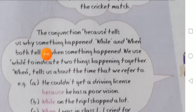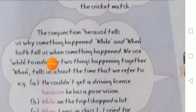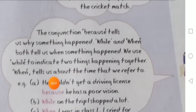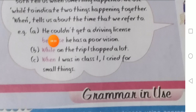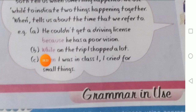The conjunction 'because' tells us why something happened — reason बताता है, यह काम क्यों हुआ। 'While' and 'when' both tell us when something happened. While का इस्तेमाल जब दो चीज़ें एक साथ होती हैं तब होता है, और when जब time बताता है कि यह काम कब हुआ। For example: He couldn't get a driving license because he has poor eyesight. While on the trip, I shopped a lot. When I was in class 1, I cried for small things.